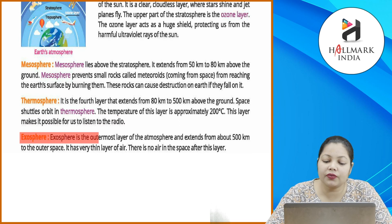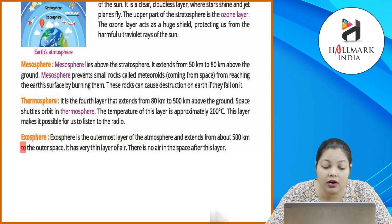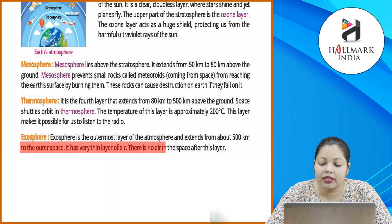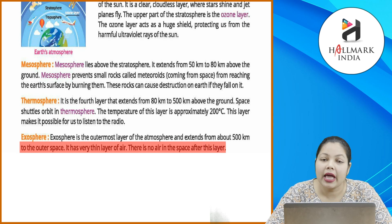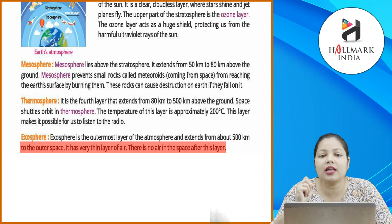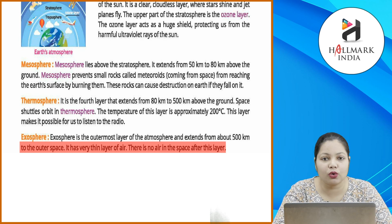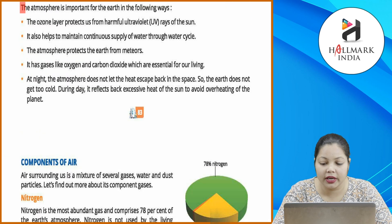Exosphere: the exosphere is the outermost layer of the atmosphere and extends about 500 km to outer space. It has a very thin layer of air; there is no air in the space after this layer. Exosphere jo hai, wo aapki last layer hai — outermost hai. Iske paas bahut thin layer hoti hai air ki. Iske upar jab aap jaate hain, to space aa jaata hai. Space mein air bilkul bhi nahi hoti, oxygen bilkul nahi hota.